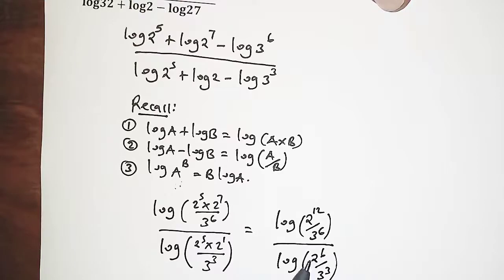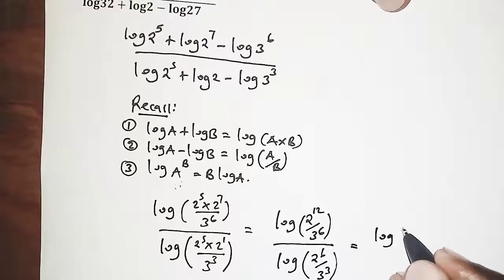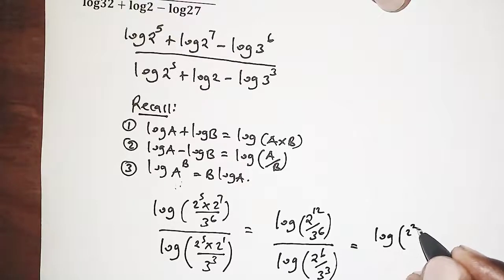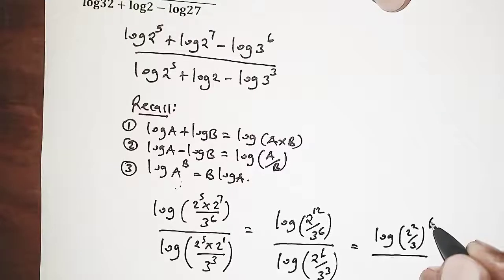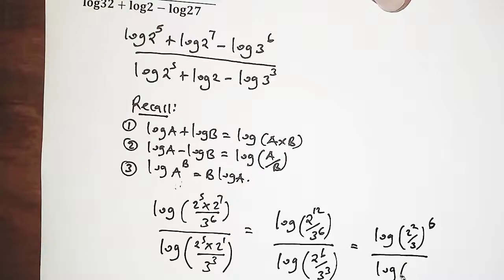We realize that for the powers they have a common factor and that is 6 on the numerator. We factor out the common factor which is 6. So that is 2 power 2 over 3 raised to power 6. On the denominator, 3 is a common factor for the powers. So we have 2 power 2 over 3 raised to power 3.